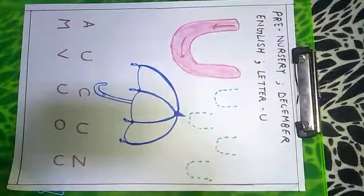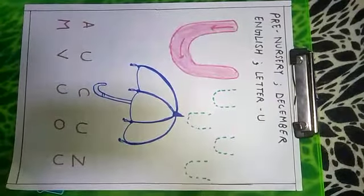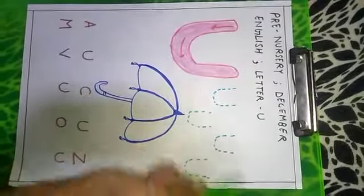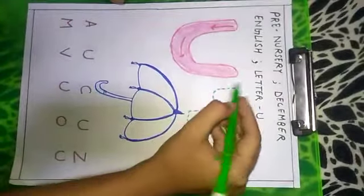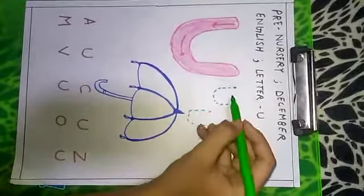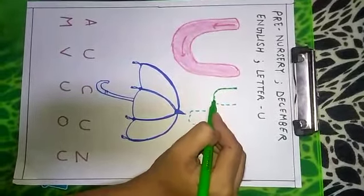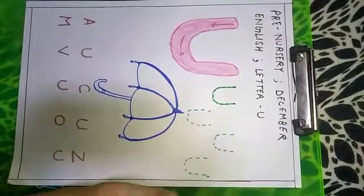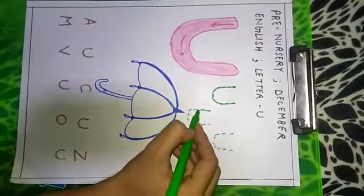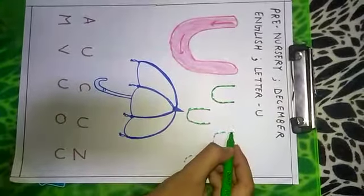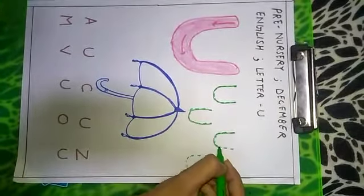Okay students, now let's learn the formation of letter U. Let's trace the dot, starting from here, down and round and up. This is U. This is letter U.